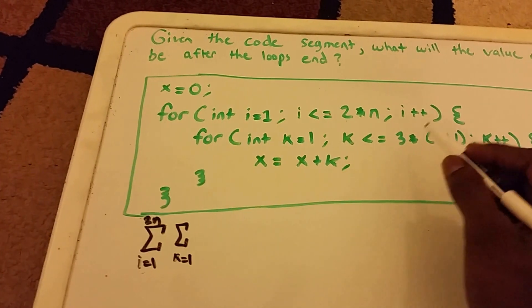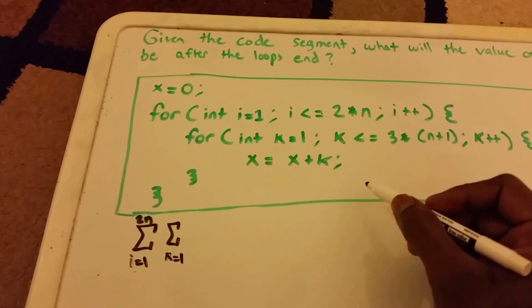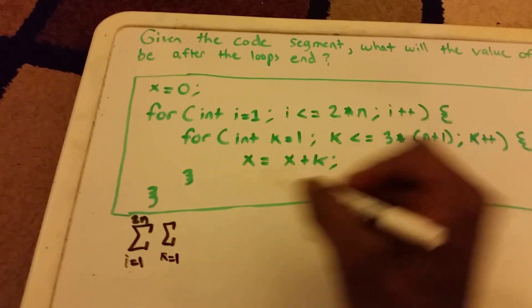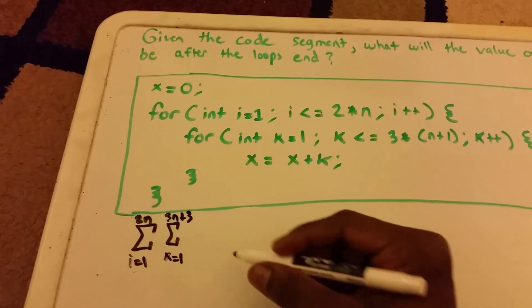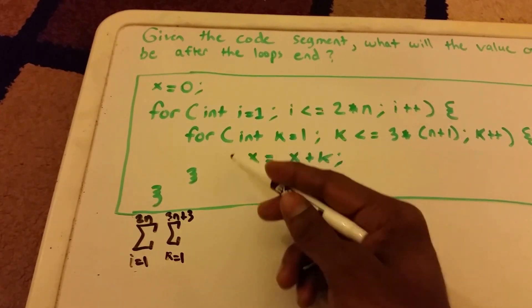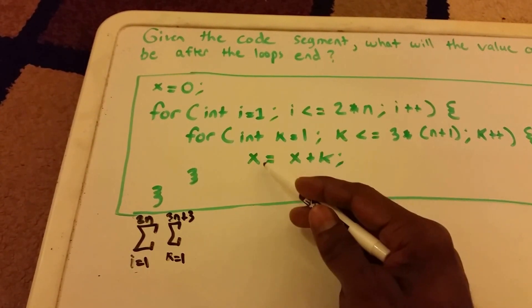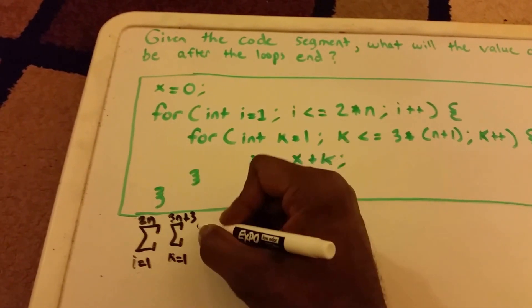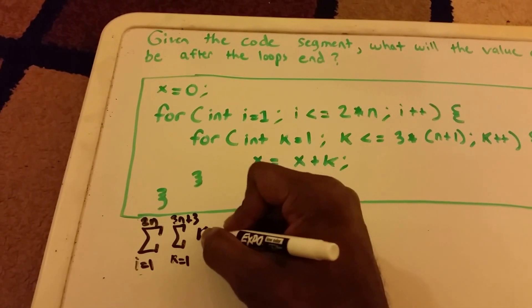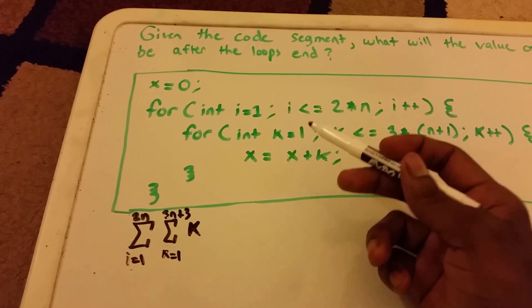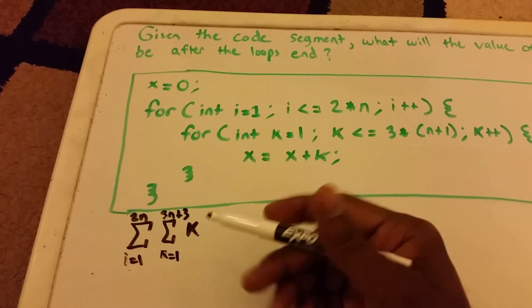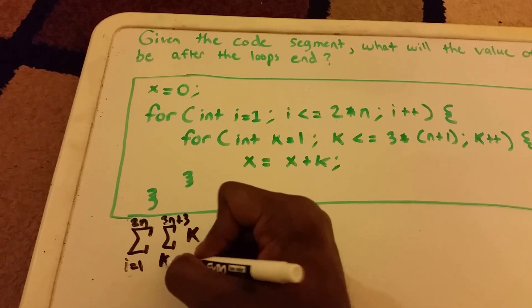To k less than or equal to three times n plus one, so three times n plus one is equal to three n plus three. And then we want to solve what the value of x would be. So x equals x plus k, so we have to put a k here since it's the variable that's being manipulated by this loop. Okay, so now we have set up the equation.